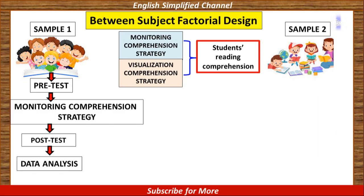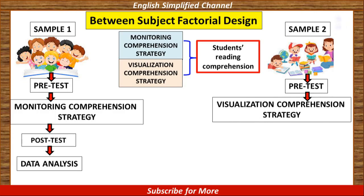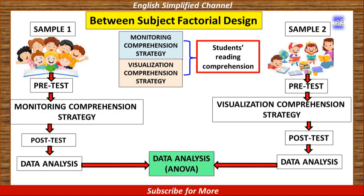Having done this, we continue to do the experiment on group 2. Firstly, give a pre-test, then continue giving the second independent variable — visualization comprehension strategy — to sample 2. And again we prove whether it has a significant effect by giving a post-test and analyzing the data. Finally, to draw the conclusion, both sets of data are statistically analyzed by ANOVA. That is what is meant by the type of between-subject factorial design.